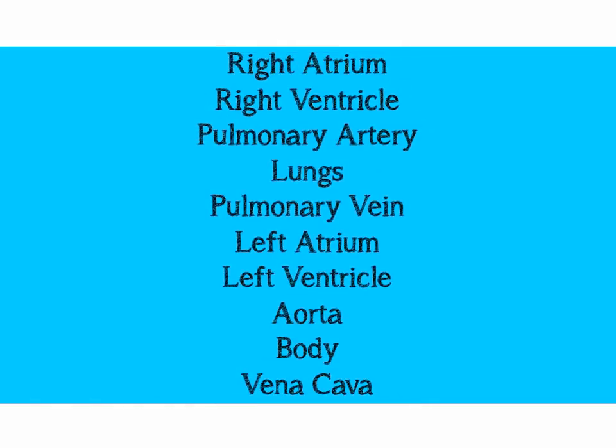So this is the order of blood vessels, body parts, and chambers. It's a cycle, so you can start at any point. I like to start at the right atrium: right atrium → right ventricle → pulmonary artery → lungs → pulmonary vein → left atrium → left ventricle → aorta → body → vena cava → repeat. This is something you do have to sit down and learn. You really need to know the order of the chambers and blood vessels — it can be tricky, but it's definitely worth spending time on.